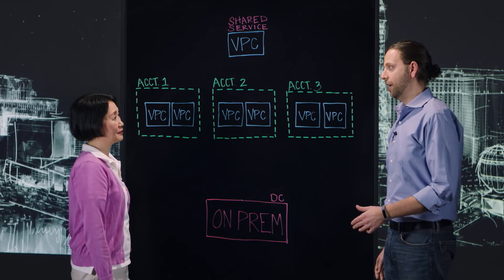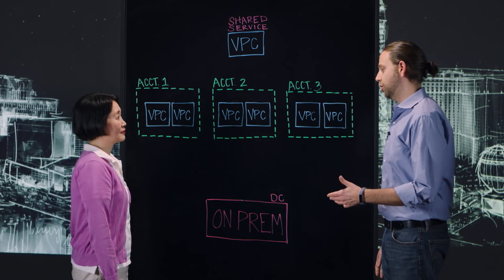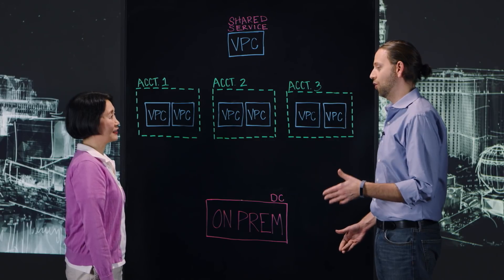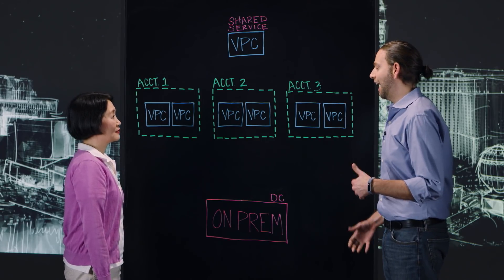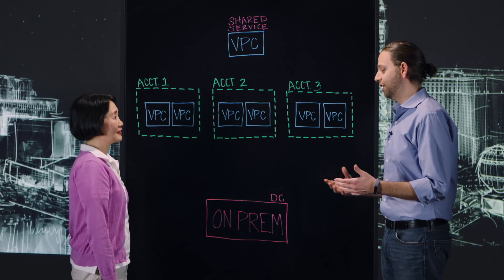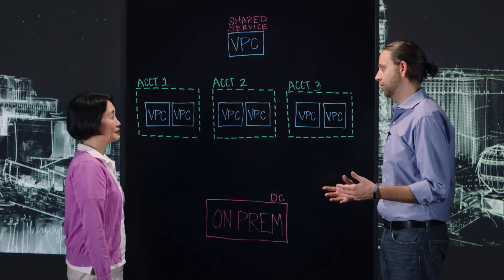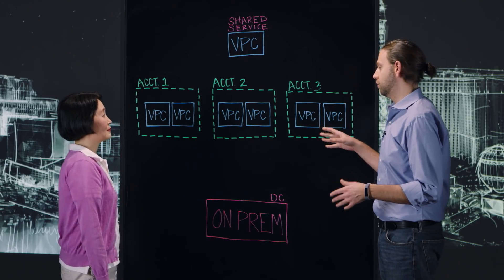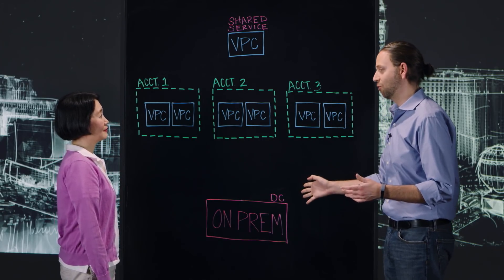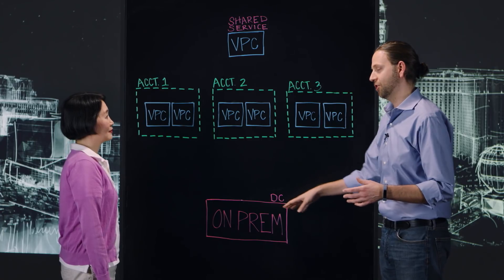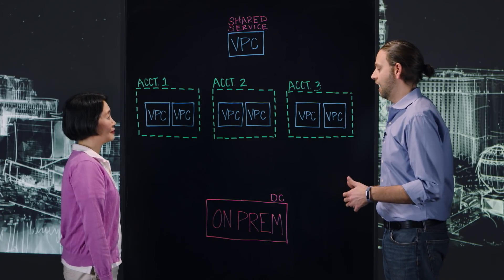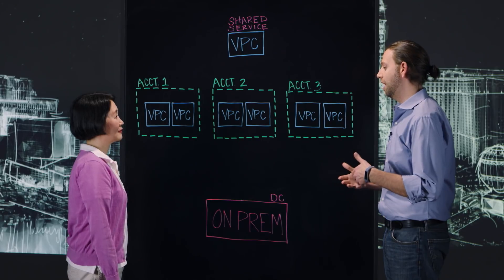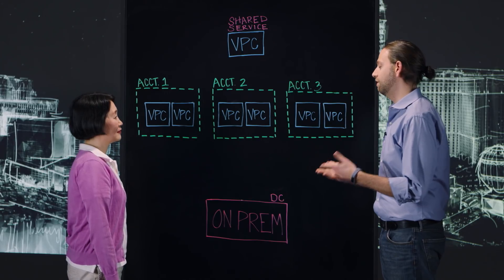Today we wanted to talk about the architecture that you've recently proposed, which is the services and transport architecture. Traditionally, what we see with a lot of customers is if they have multiple VPCs and multiple accounts, they typically just connect them directly to their on-premises environment over Direct Connect. What does this architecture look like, and how did you come about developing it?